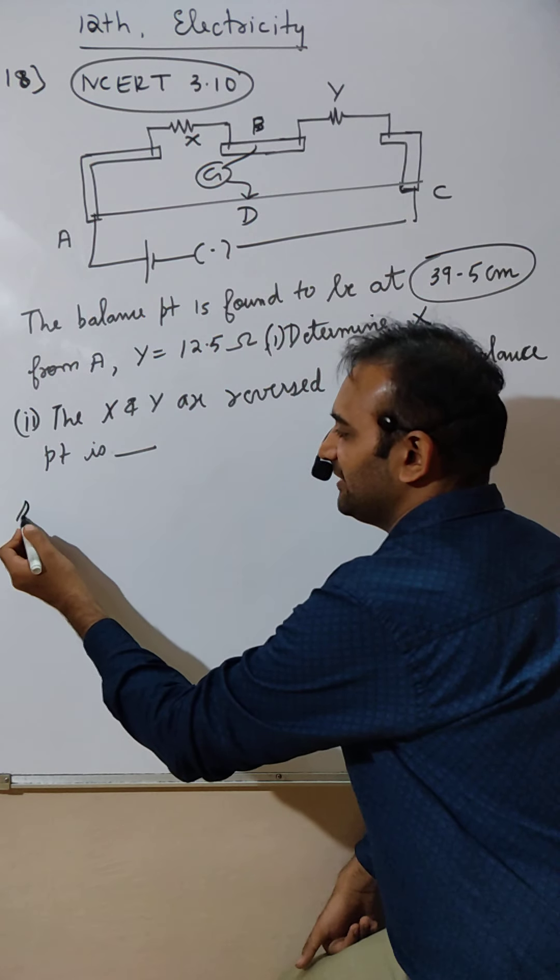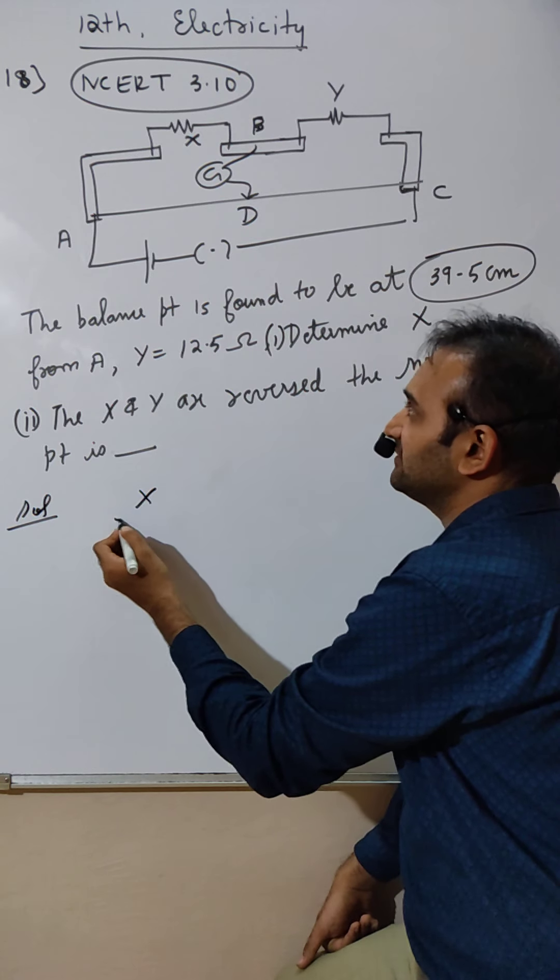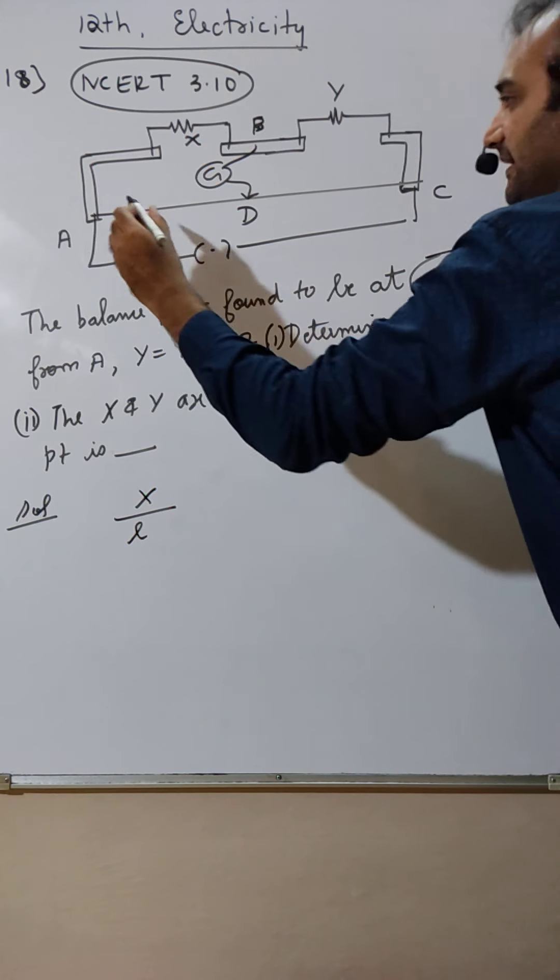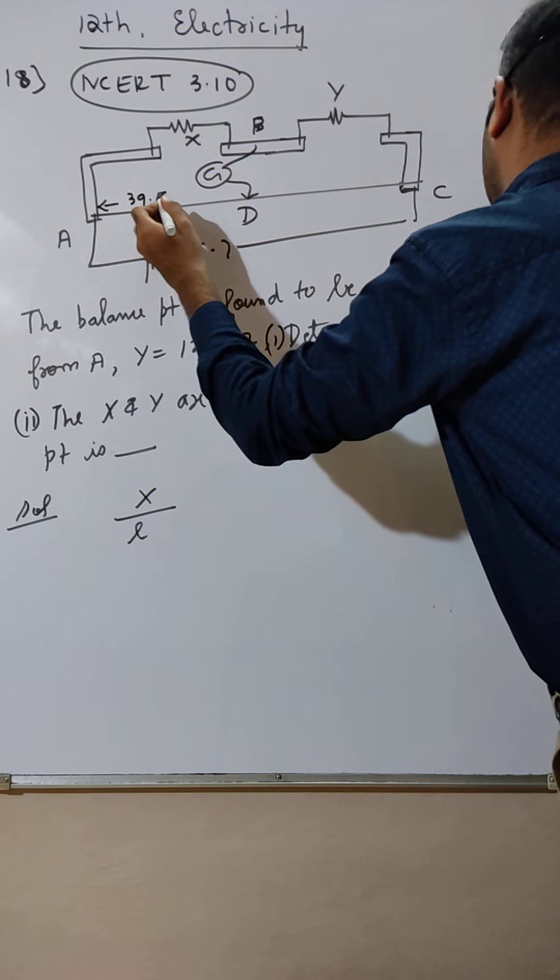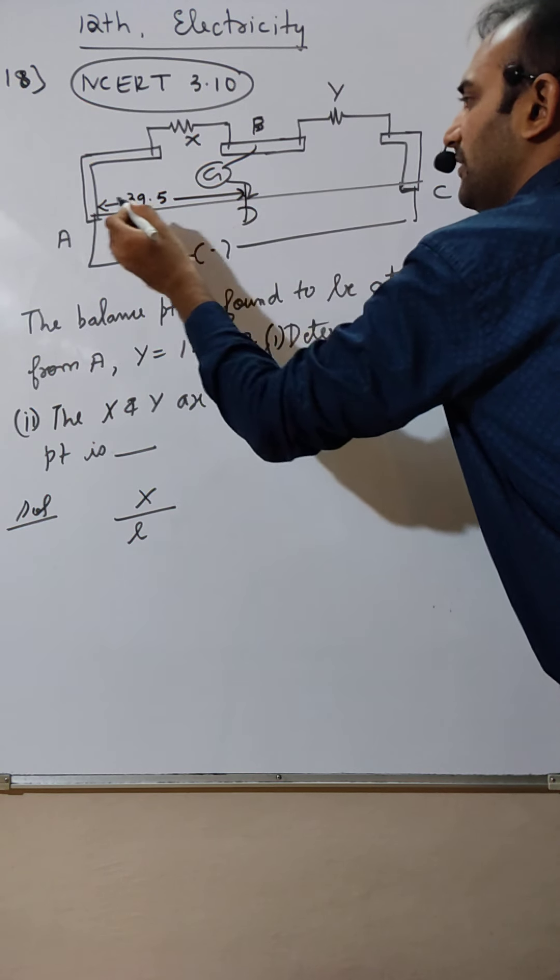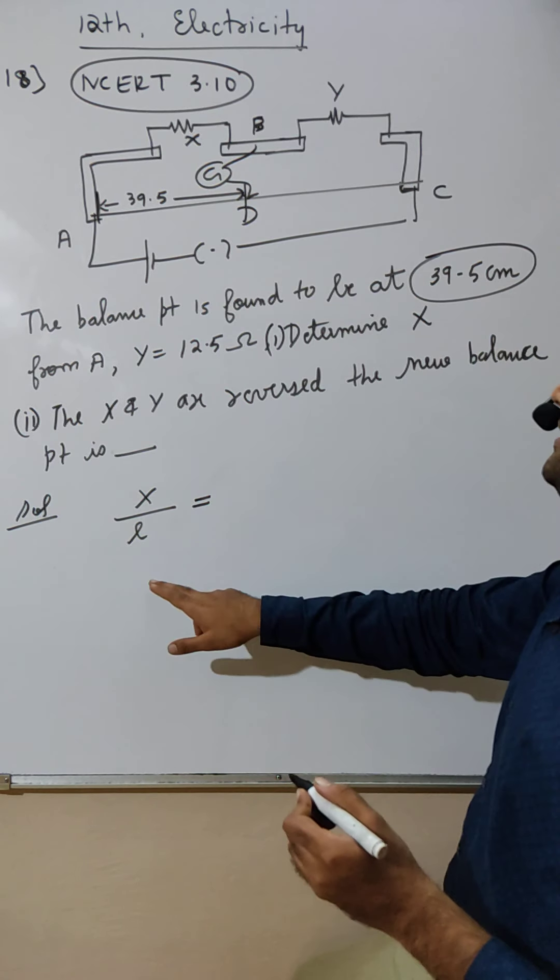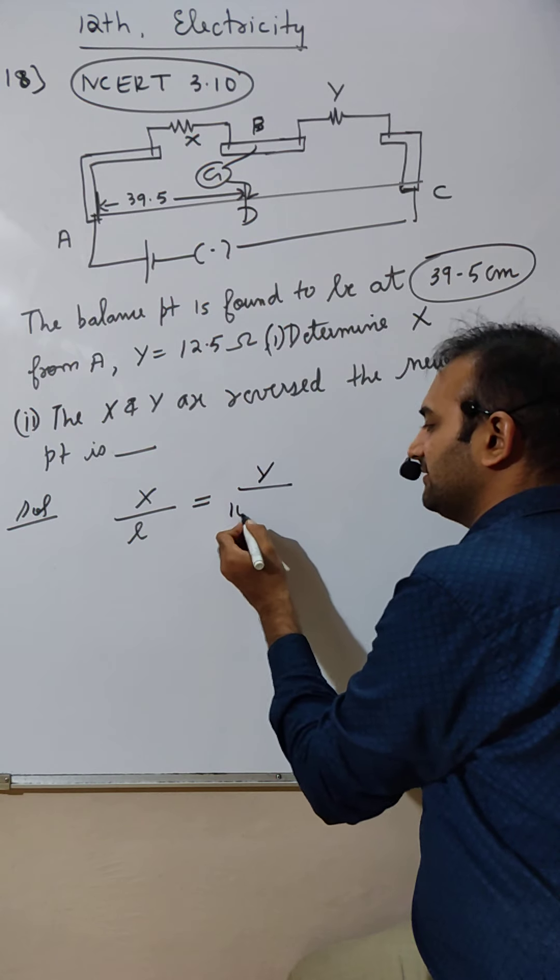So first, what is the ratio? The ratio is P by Q, which means X by L. This L here is 39.5. So X by L equals P by Q equals R by S equals Y by 100 minus L.